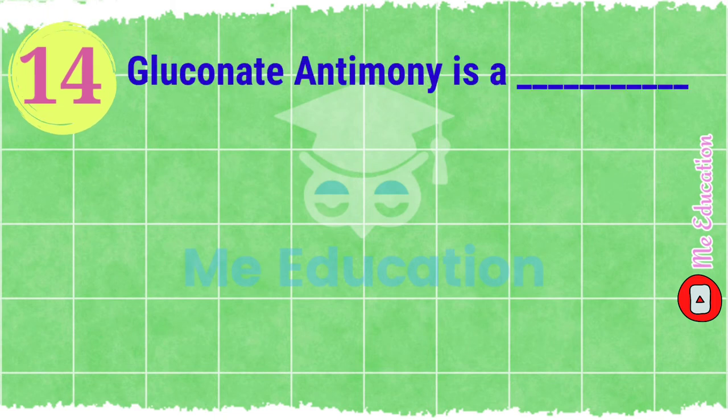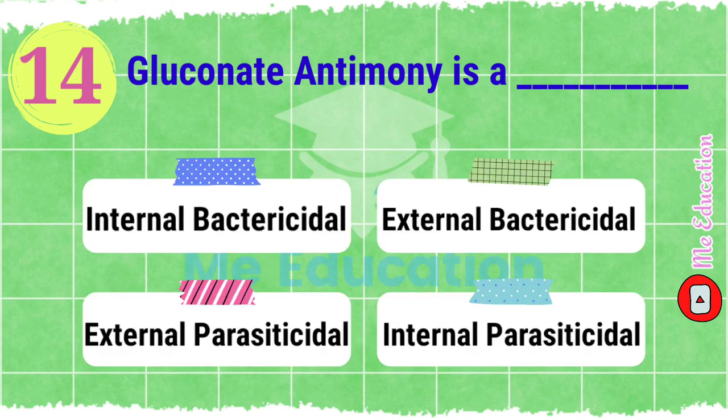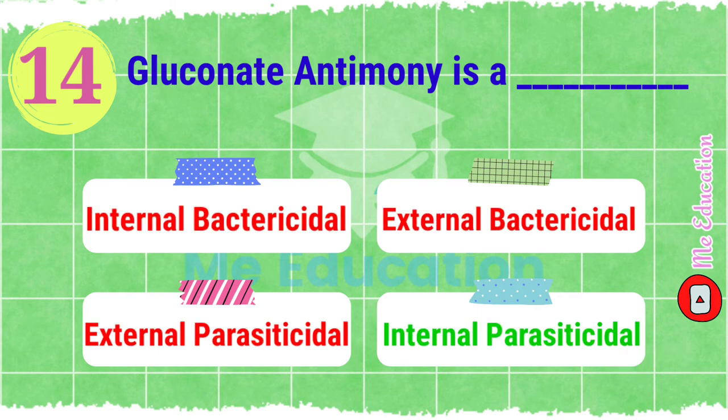Question number fourteen: gluconate antimony is a dash. Options: A) internal bactericidal, B) external bactericidal, C) external parasiticidal, D) internal parasiticidal. The right answer is internal parasiticidal.